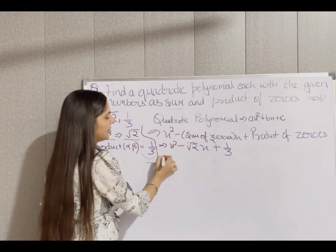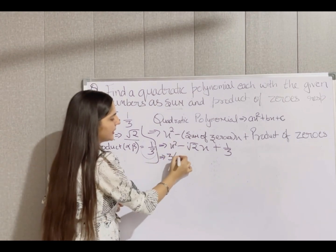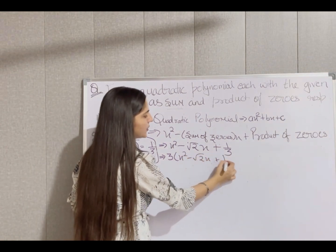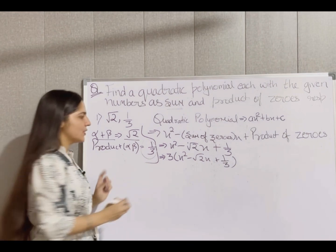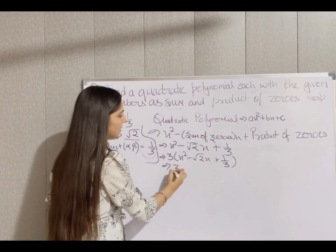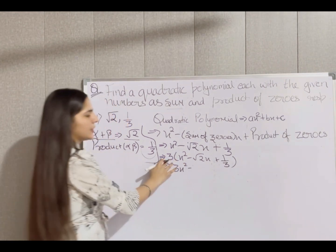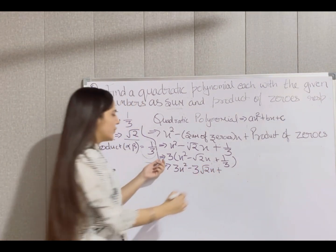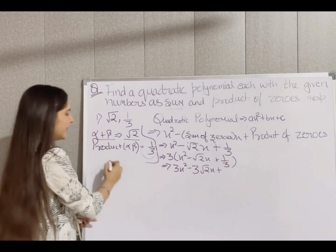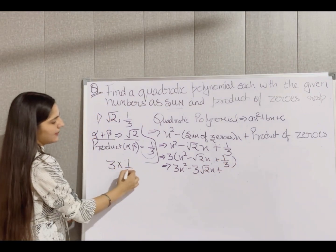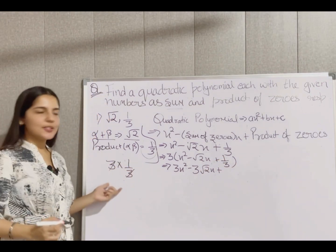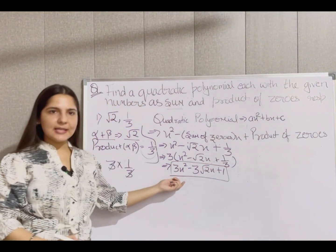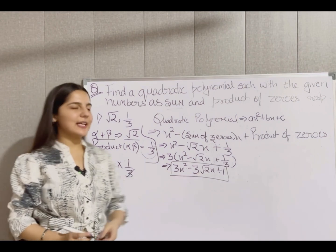The denominator here is 3, so we multiply the whole expression by LCM = 3. This gives 3x² minus 3√2·x plus 1. So the required quadratic polynomial is 3x² - 3√2x + 1.